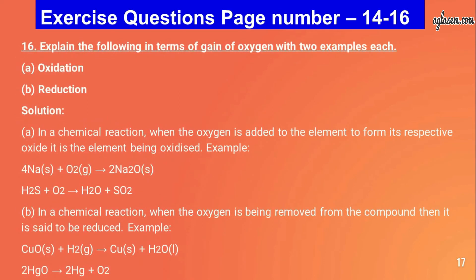Question number sixteen: explain oxidation and reduction in terms of gain or removal of oxygen with two examples each. In a chemical reaction when oxygen is added to an element to form its oxide, the element is being oxidized. When oxygen is removed from a compound, it is said to be reduced. Example: CuO(s) + H₂(g) → Cu(s) + H₂O(l); 2HgO → 2Hg + O₂.